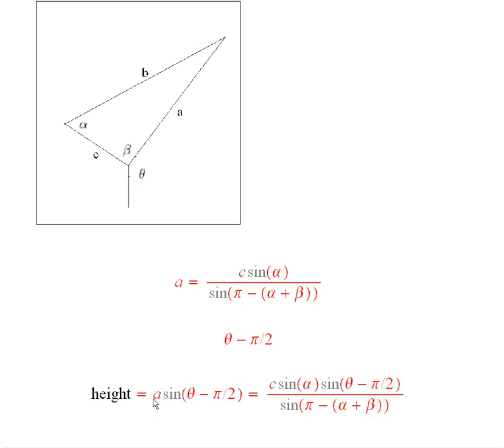So the height of the mountain would be a times the sine of the angle theta minus pi halves. And then if I plug in what a equals, I get this formula here.